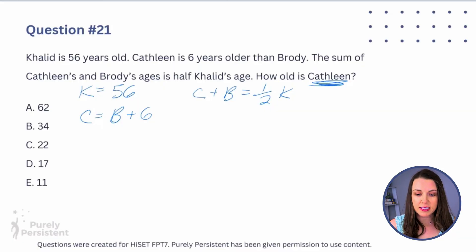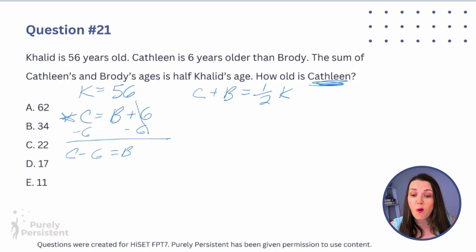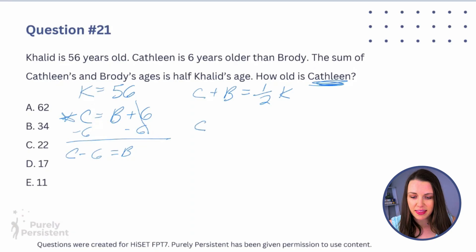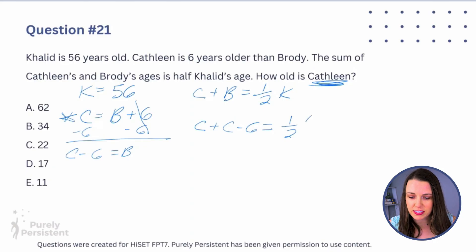Since I'm looking for Kathleen, not Brody, I'll take the equation Kathleen = Brody + 6 and solve for Brody by subtracting six from both sides, giving me Kathleen − 6 = Brody. Now I'll substitute that into the other equation: Kathleen + (Kathleen − 6) = ½ of Khalid, and I already know Khalid is 56.